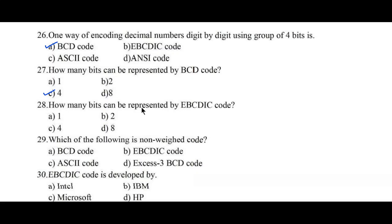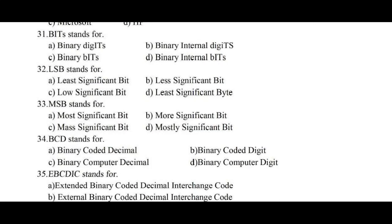Question number twenty-eight: how many bits are represented by EBCDIC code? Option D, 8 bits, is the right answer. Question number twenty-nine: which of the following is a non-weighted code? Option D, Excess-3 BCD code, is the right answer. Question number thirty: EBCDIC code was developed by — option B, IBM, is the right answer.